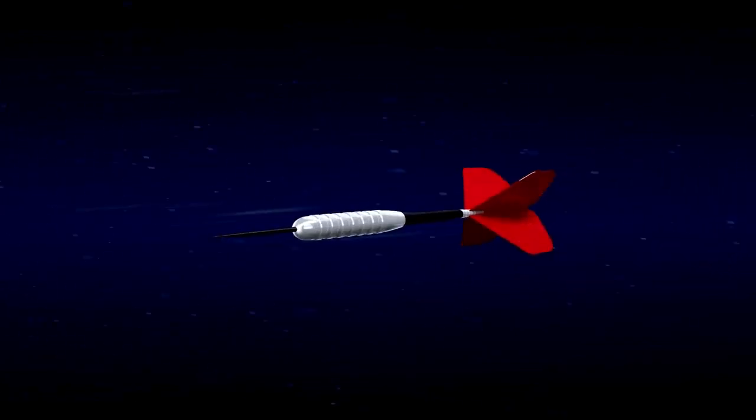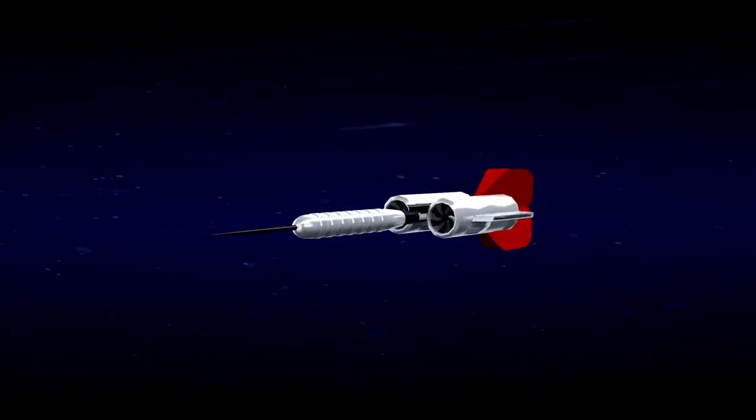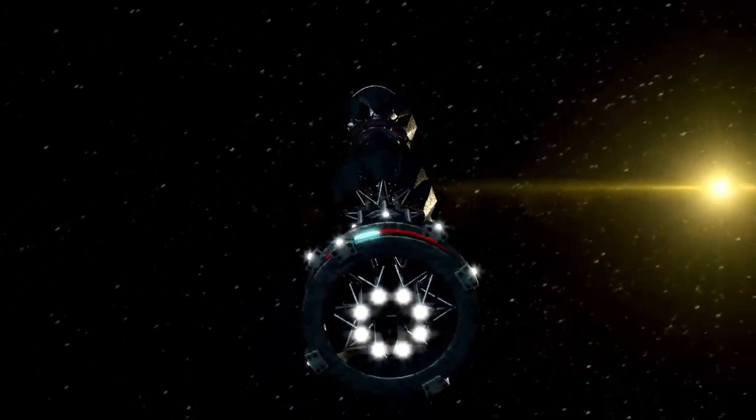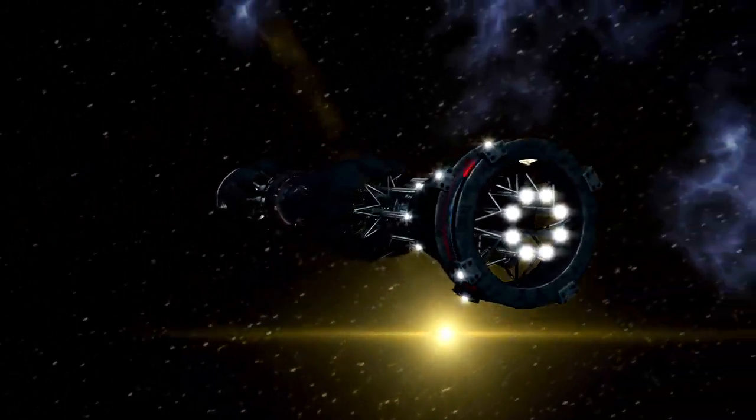In 1977, NASA launched two spacecraft, Voyager 1 and Voyager 2, on a mission like no other to explore the farthest corners of our solar system and beyond.